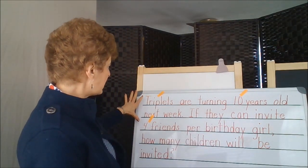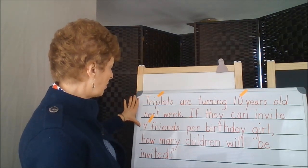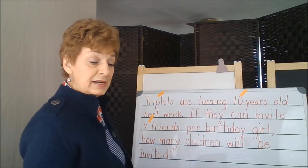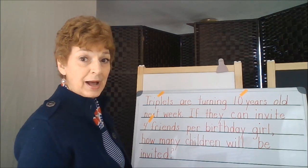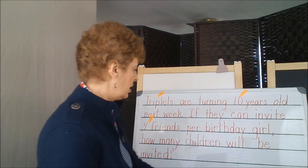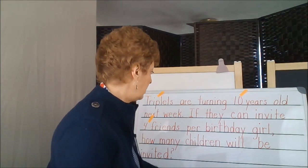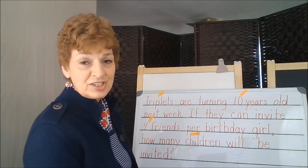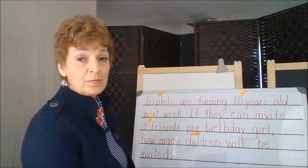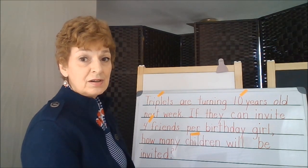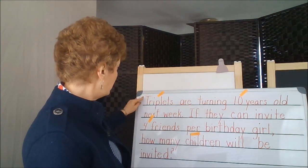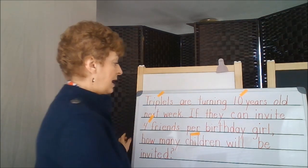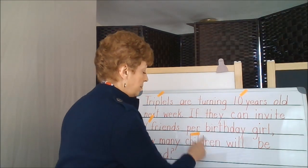Our focus is here on the triplets and the four friends. The word in here that could possibly be an operation would be 'per,' per suggesting the operation of multiplication. So our number three and our number four may be multiplied.